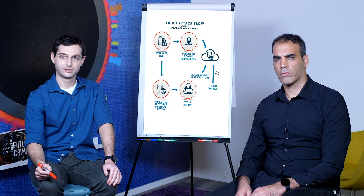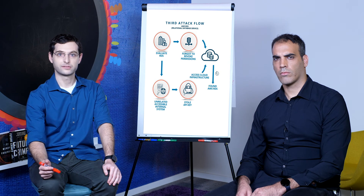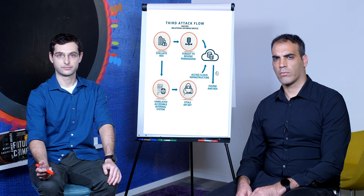Another attack that took place recently was when one company decided to evaluate its AWS relational database service, called RDS, to upscale its customer database. The company uploaded a snapshot of its customer database to a test AWS RDS instance. Then, in an unrelated incident, the company left an internal system accessible from the internet. The internal system stored a copy of the company's AWS API key. A malicious actor found this computing instance and stole the API key, which was assigned an overly permissive role, to access the company's cloud infrastructure — where he found the AWS RDS service used for testing, along with all the internal customer information.